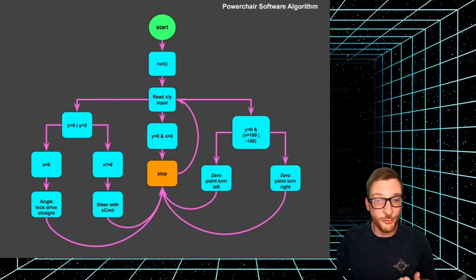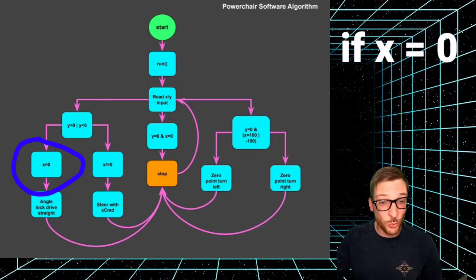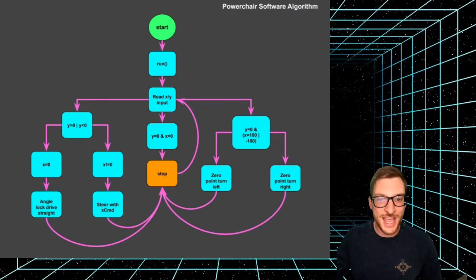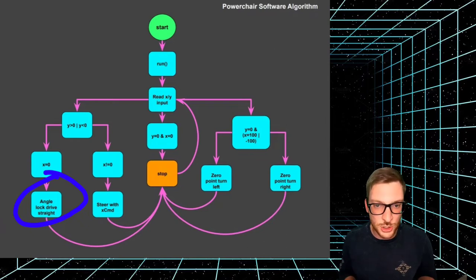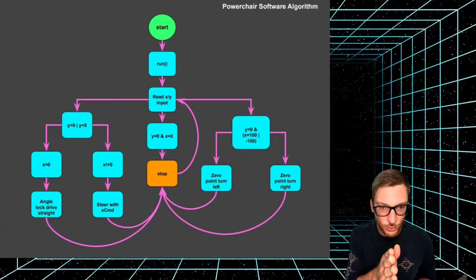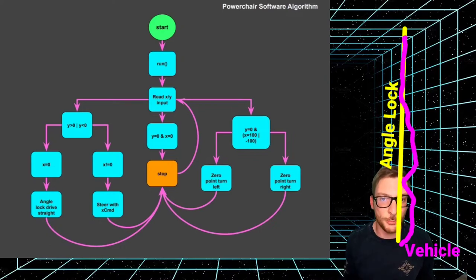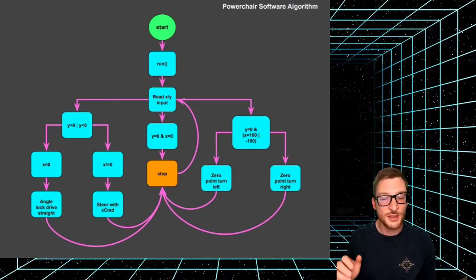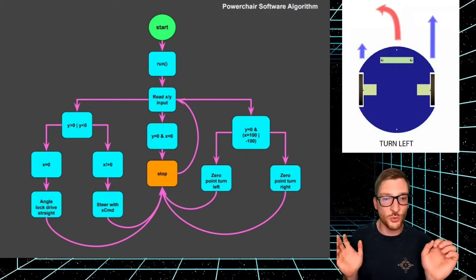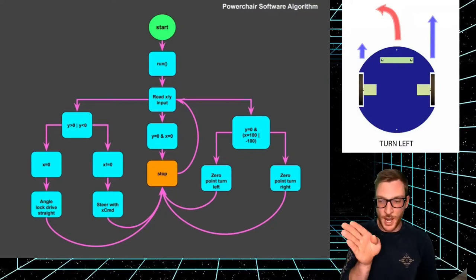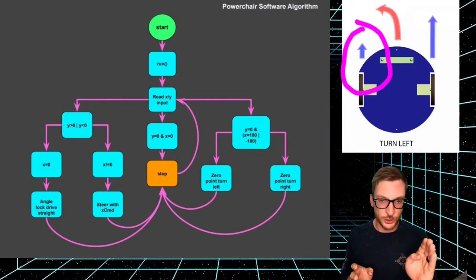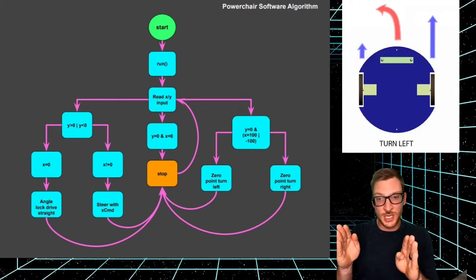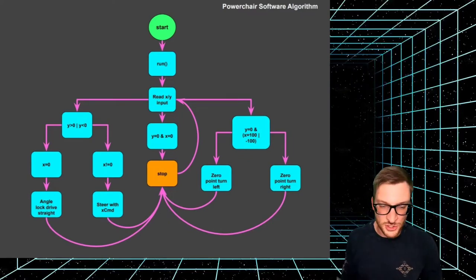If the X-axis is zero when you're commanding the chair forward or backward, then it is assumed that you would like to go straight and the angle at that point in time is locked in. This is what I call angle lock. The angle lock value is used to control the wheel velocities to maintain that angle through an error that's calculated while the chair is in operation. If the error is positive, then the left wheel is slowed down to correct the trajectory and vice versa, because if you want to bias your vehicle left you want to slow the left wheel down, keep the right wheel at full speed, and you'll naturally begin to turn left.